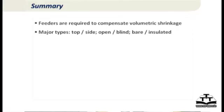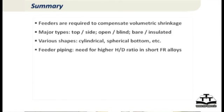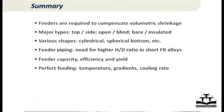To summarize: we need feeders to compensate volumetric contraction between liquidus and solidus. We looked at various types — blind and open feeders, top and side feeders, with different kinds of insulation or exothermic covers. Shapes can vary, but anything closer to a spherical shape like spherical top or spherical bottom is a little more efficient for the same volume, though you must ensure the pipe does not enter the casting. We introduced feeding capacity, feeding efficiency, and yield. Perfect feeding requires controlled temperatures, gradients, and cooling rates to minimize or prevent shrinkage defects.